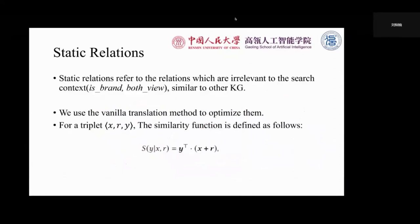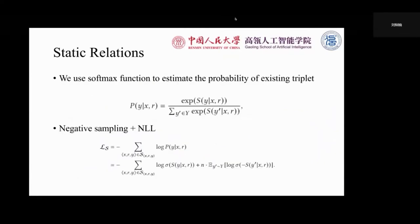The first one is static relations. Static relations refer to the relations which are irrelevant to the search context, such as 'is brand' or 'also bought'. We use the vanilla translation method to optimize them. For triplet (X, R, Y), the similarity function is defined as a simple dot product model. We use a softmax function to estimate the probability of an existing triplet. And due to the large amounts of negative ones, we use negative sampling and NLL loss to optimize them.